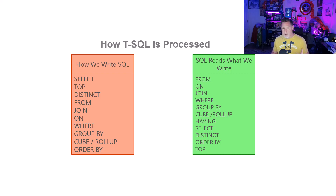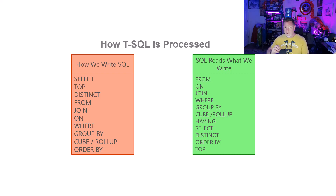Top 1 returns so quickly — yes, it still runs the entire statement behind the scenes, but it shortcuts the return process and only has to return that one row to you. So if I do a TOP 1, it seems really quick, but I'm still churning the underlying subsystem.